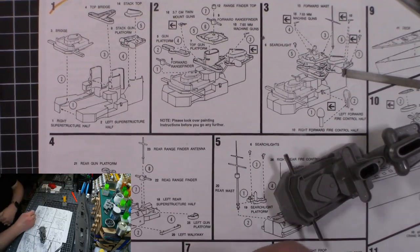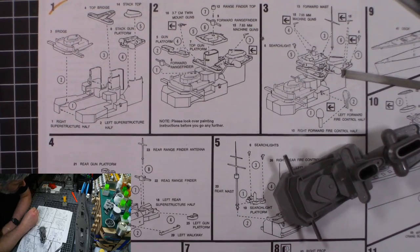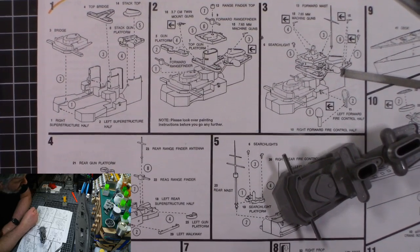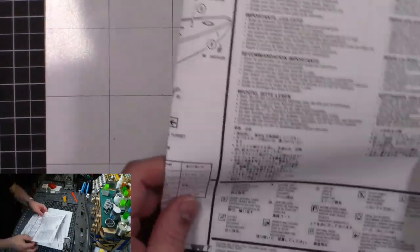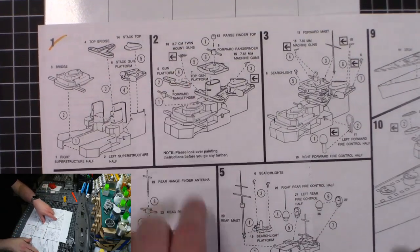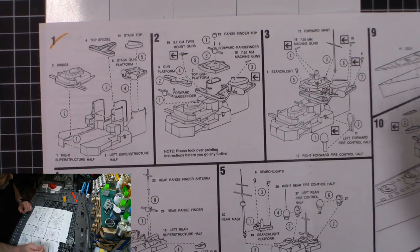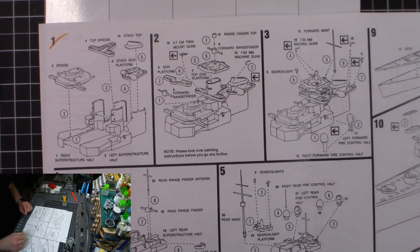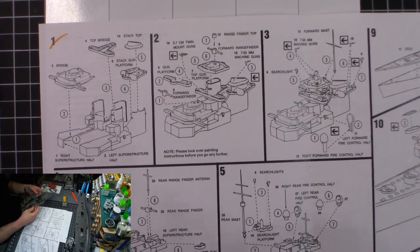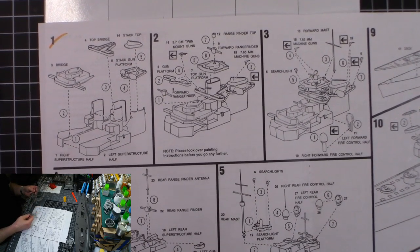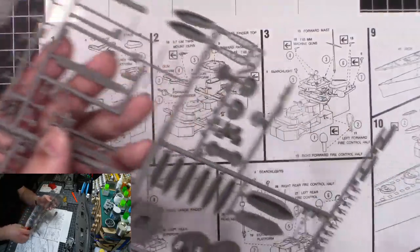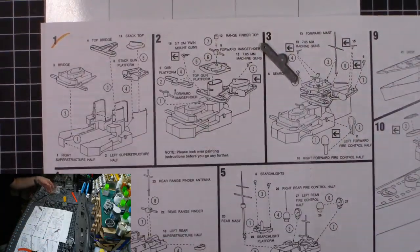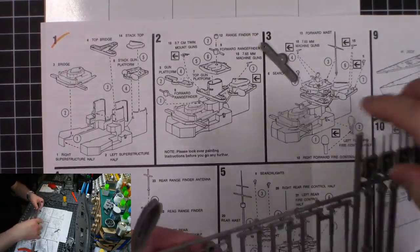So we have this first step is done. First step is done. Let's mark it off because we did something. Now, we're going to please look over painting instructions before going further. Yeah, we're not painting it. So, what does that arrow mean? Okay, an arrow repeats the steps for the other side. So we have an arrow, so we have to put a gun mount on the other side. And that's a 3.7 centimeter gun, twin gun mount.